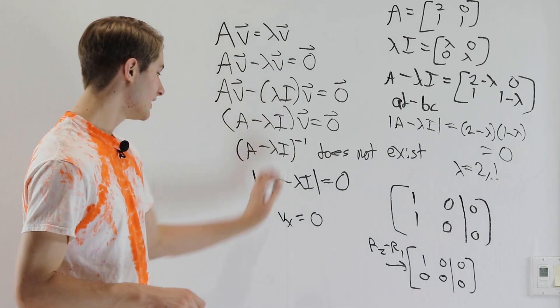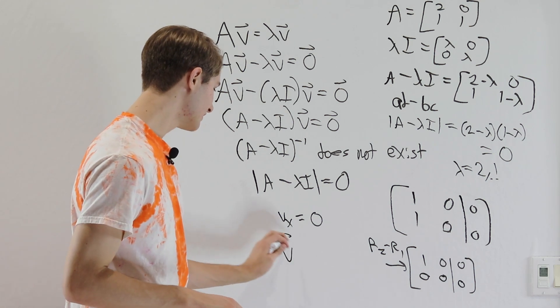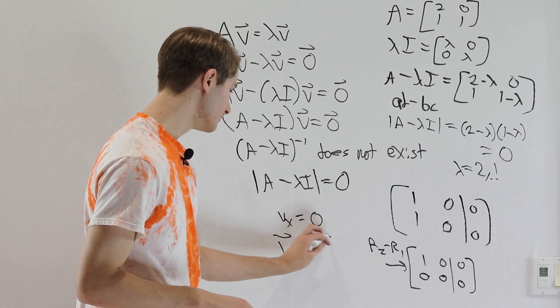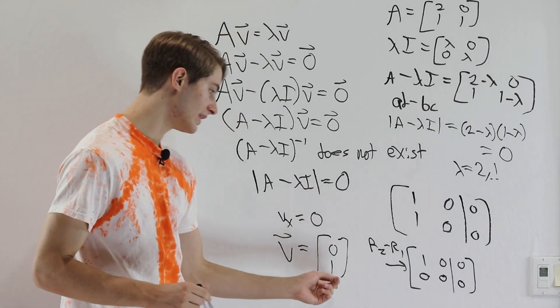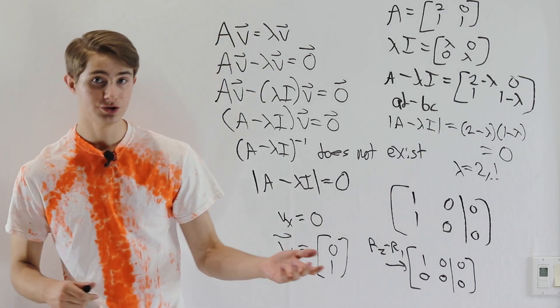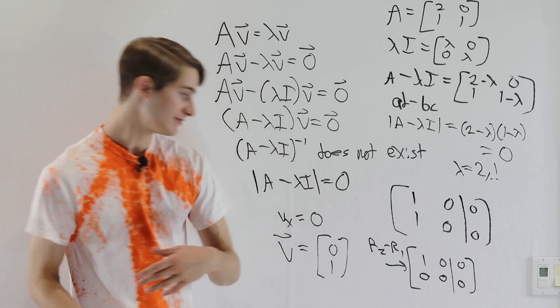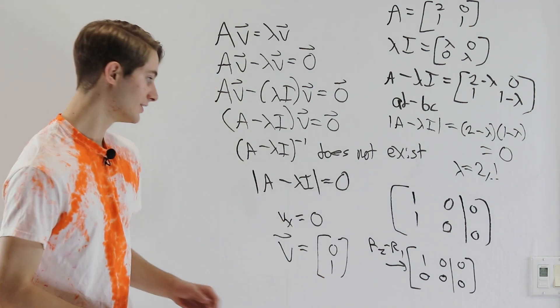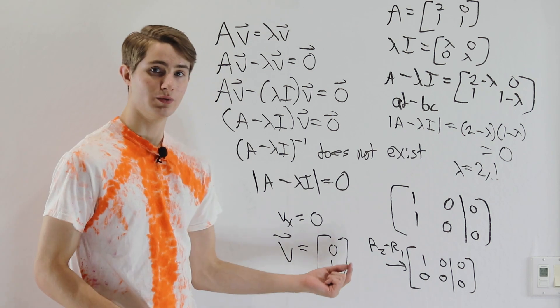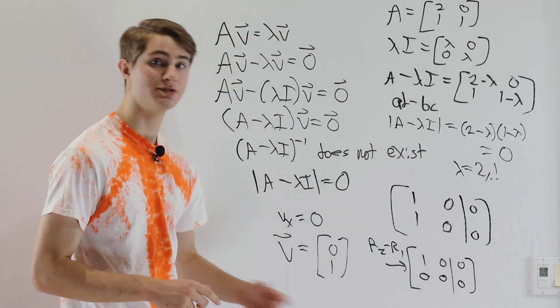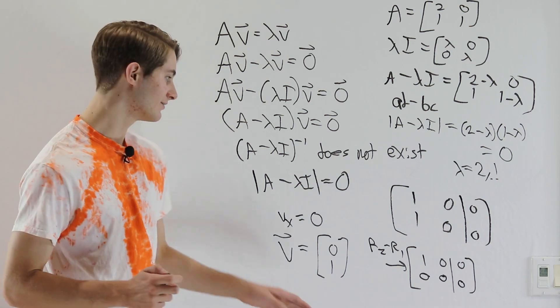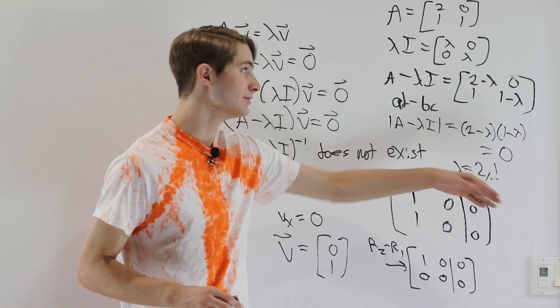So when we define the eigenvector, we say the eigenvector V is equal to [0,1]. So we have our x value of 0 and our y value of 1. Now [0,2] is an eigenvector, [0,3] is an eigenvector, [0,anything] is an eigenvector. But we just pick one value of y and then there's an implicit understanding that we could multiply this by any constant and it would still be an eigenvector with the eigenvalue of 1.